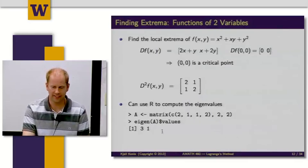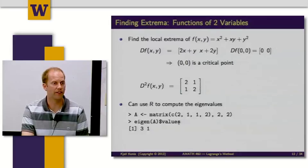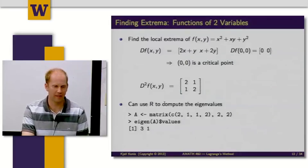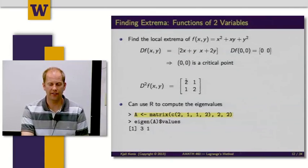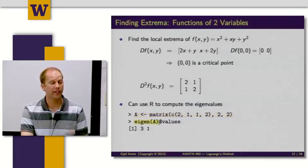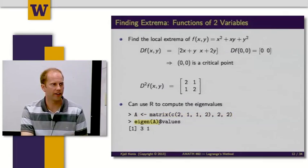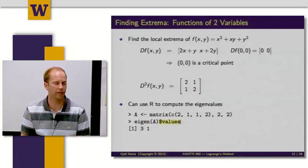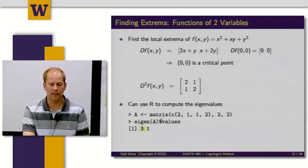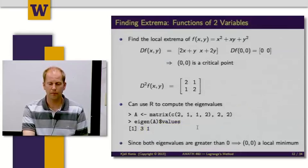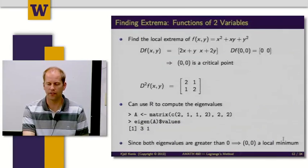I'm going to use R to compute eigenvalues. I'll make a matrix A that has 2, 1, 1, 2 in it. Eigen is the function that computes an eigenvector eigenvalue decomposition. It returns a list. I'm going to use this dollar sign operator to pluck only the values element off that list. The eigenvalues are 3 and 1. So they're both strictly greater than 0. Since both eigenvalues are greater than 0, (0,0) is a local minimum.